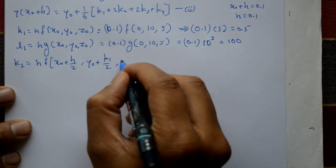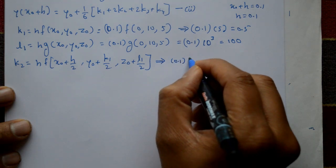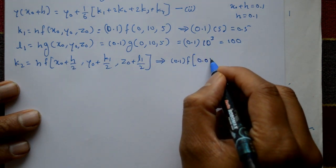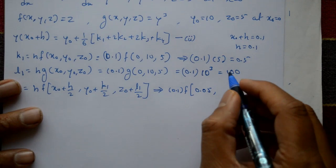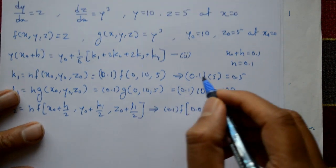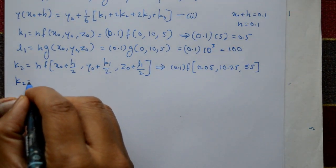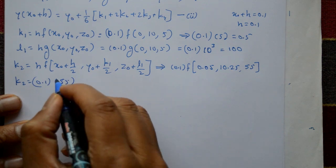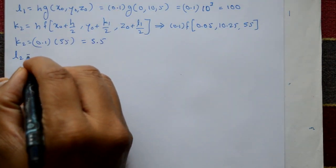For k2: x₀ + h/2 = 0.05, y₀ + k1/2 = 10 + 0.25 = 10.25, z₀ + l1/2 = 5 + 50 = 55. Since f(x,y,z) = z, k2 = 0.1 × 55 = 5.5.